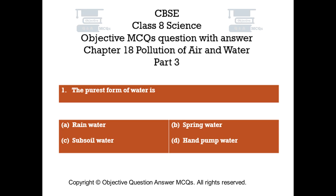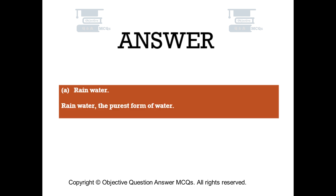Question number 1: The purest form of water is — Option A: rain water, Option B: spring water, Option C: subsoil water, Option D: hand pump water. The right answer is Option A: rain water. Rain water is the purest form of water.